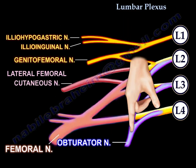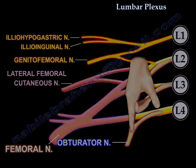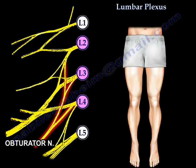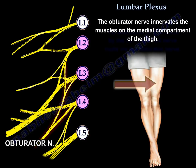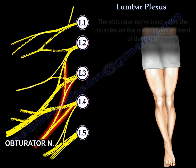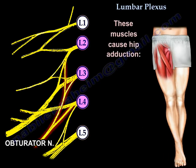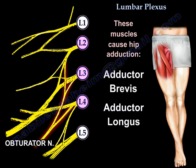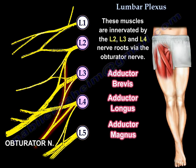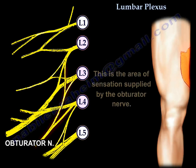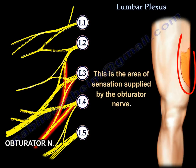The obturator nerve innervates the muscles of the medial compartment of the thigh. These muscles cause hip adduction, and the obturator nerve is innervated by L2, L3, and L4 nerve roots. This is the area of sensation supplied by the obturator nerve.